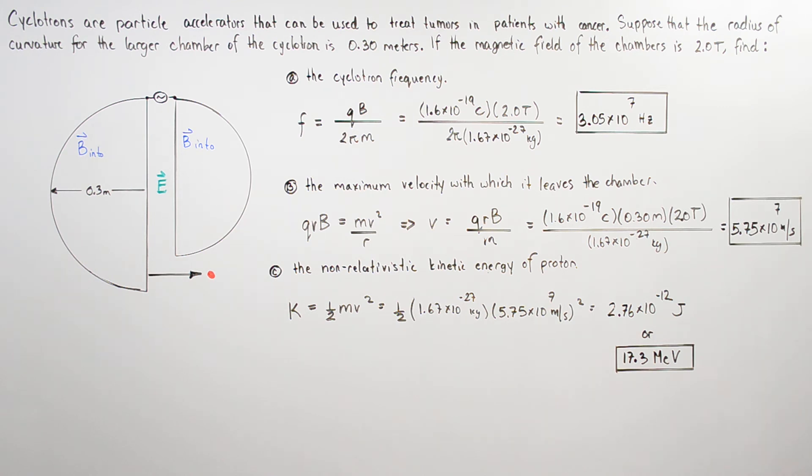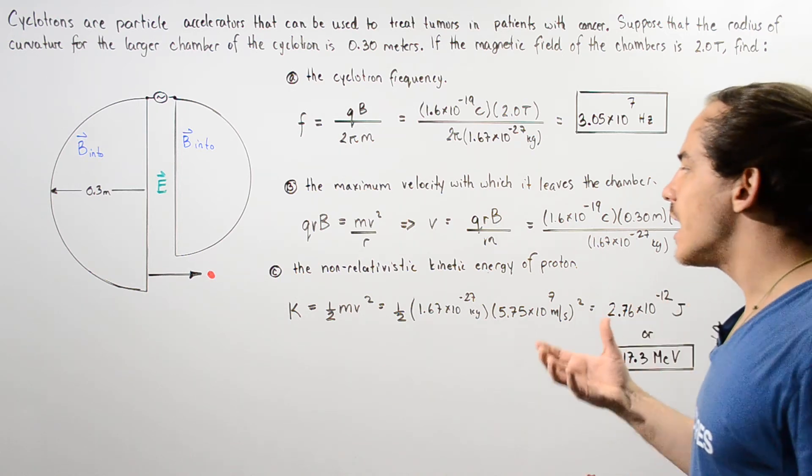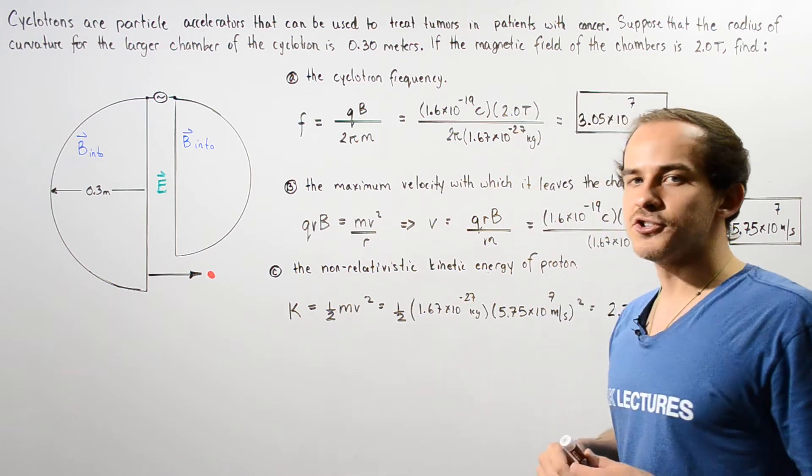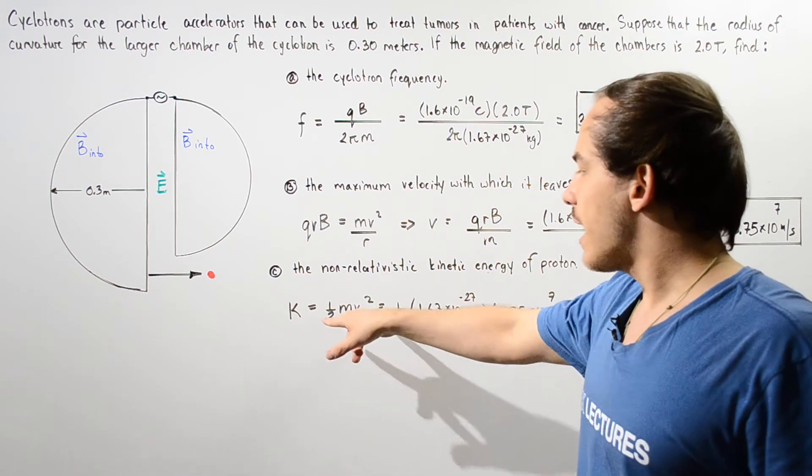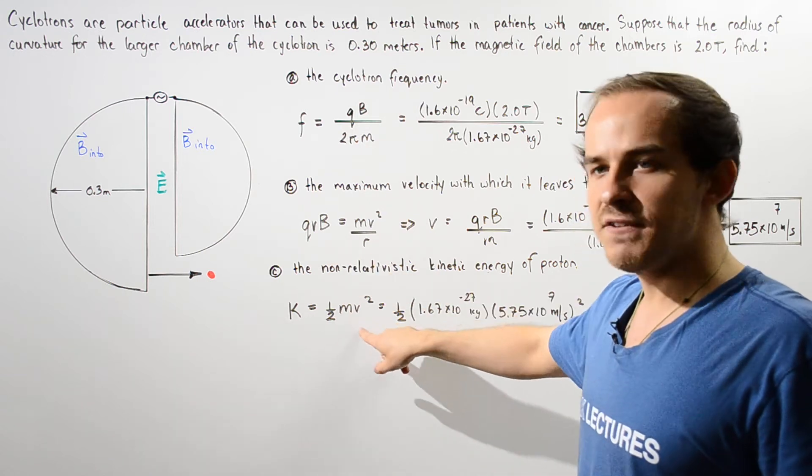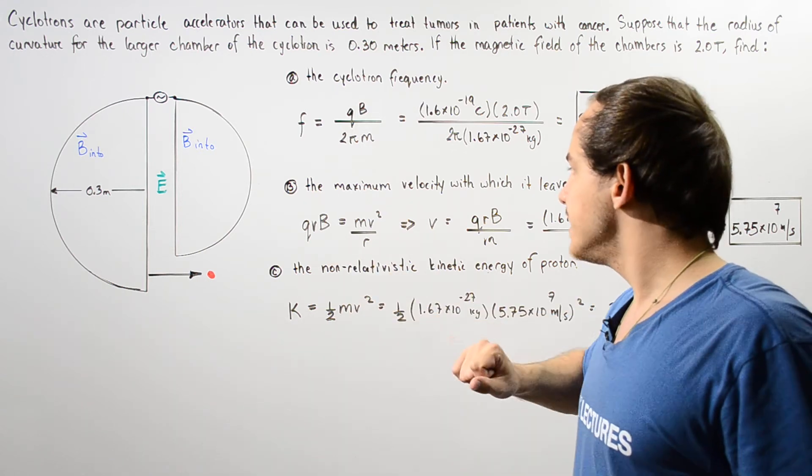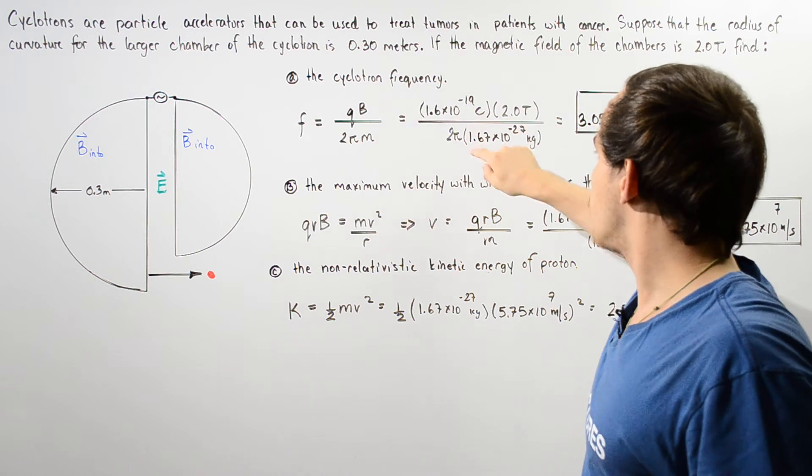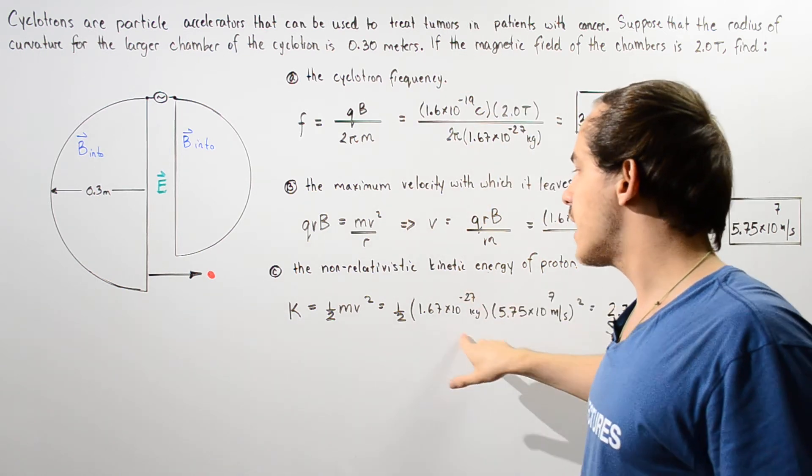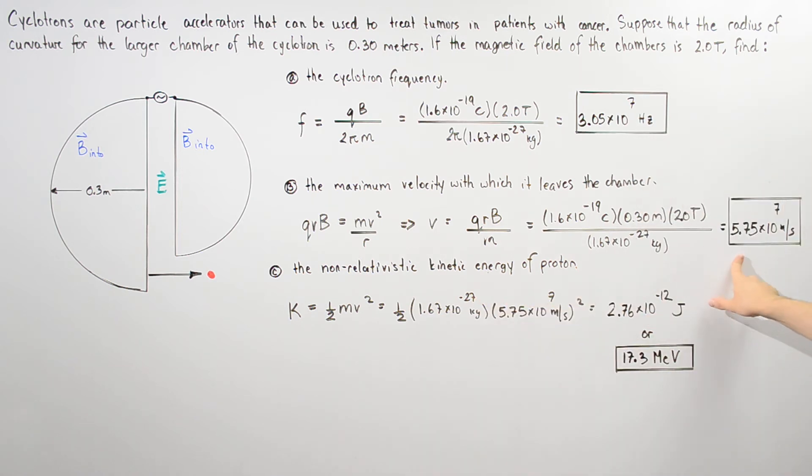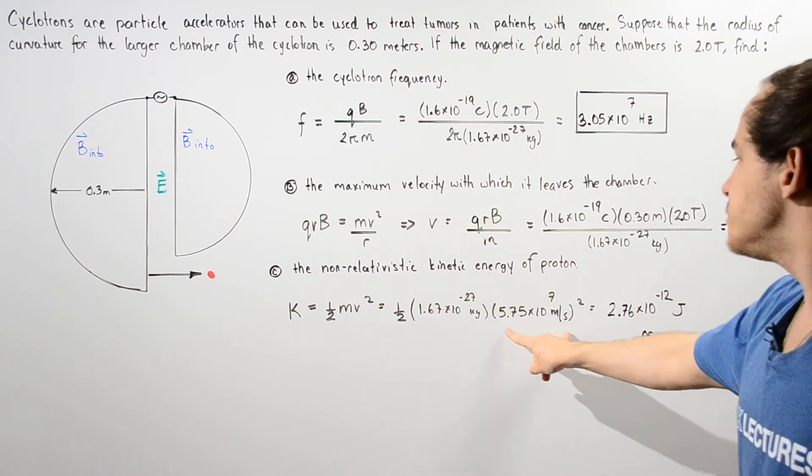And finally, let's move on to part C. Calculate the non-relativistic kinetic energy of that proton. So basically we want to apply our equation ½mv². So m is given to be the mass, 1.67 × 10⁻²² kilograms, and the velocity was found in part B. So we squared the velocity, multiplied by the mass, multiplied that by 0.5.